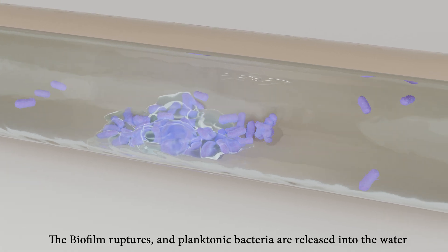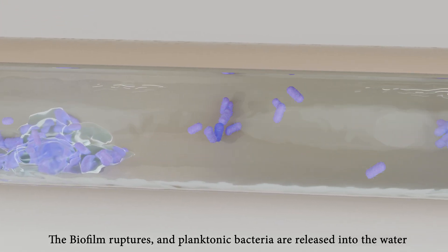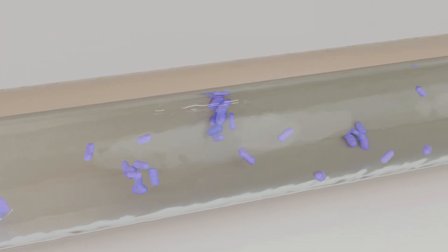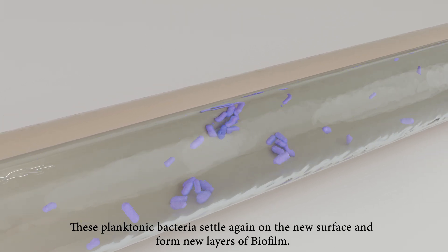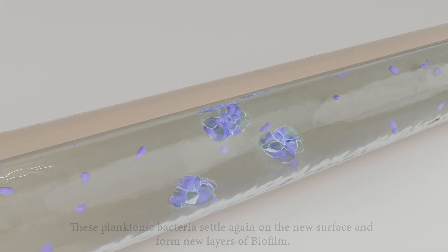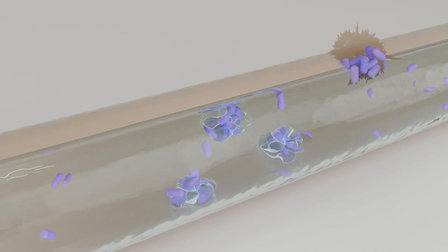From time to time, the biofilm ruptures and planktonic bacteria are released into the water. These planktonic bacteria settle again on new surfaces and form new layers of biofilm. Under newly developed biofilm, bacteria can hide and new bacteria colonies are developed.